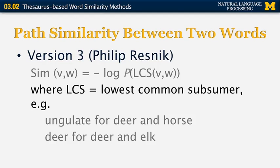If we look at the probability of those LCS nodes, it should be pretty obvious that in any given corpus the probability of ungulate will be larger than the probability of deer, because ungulates are more common than deer, with deer being a special case of ungulates. So if we take the logarithm of the probability of those two values, we obtain the similarity that Philip Resnick defined.